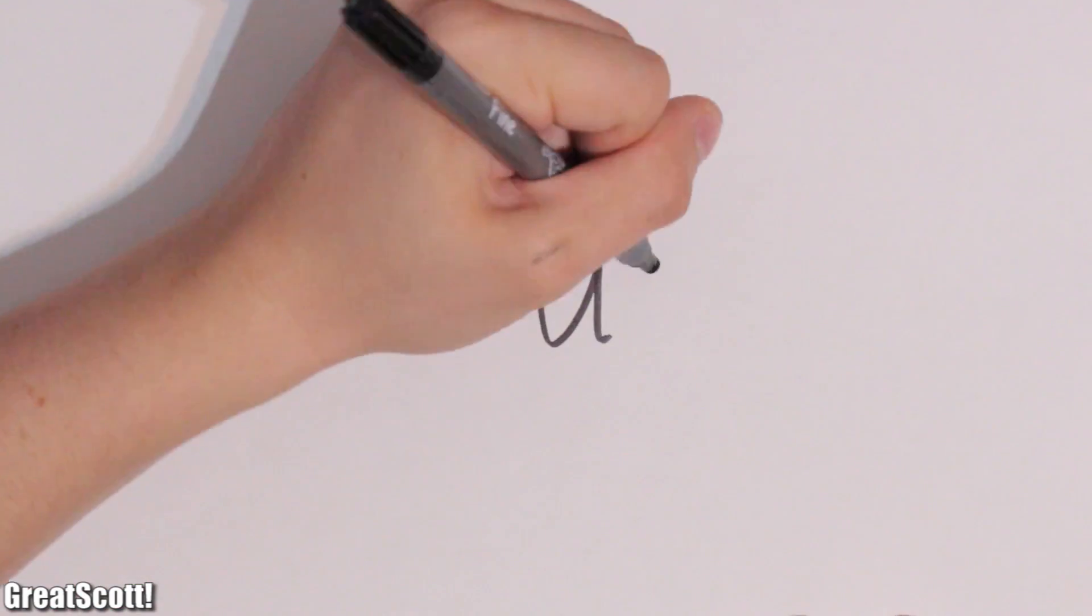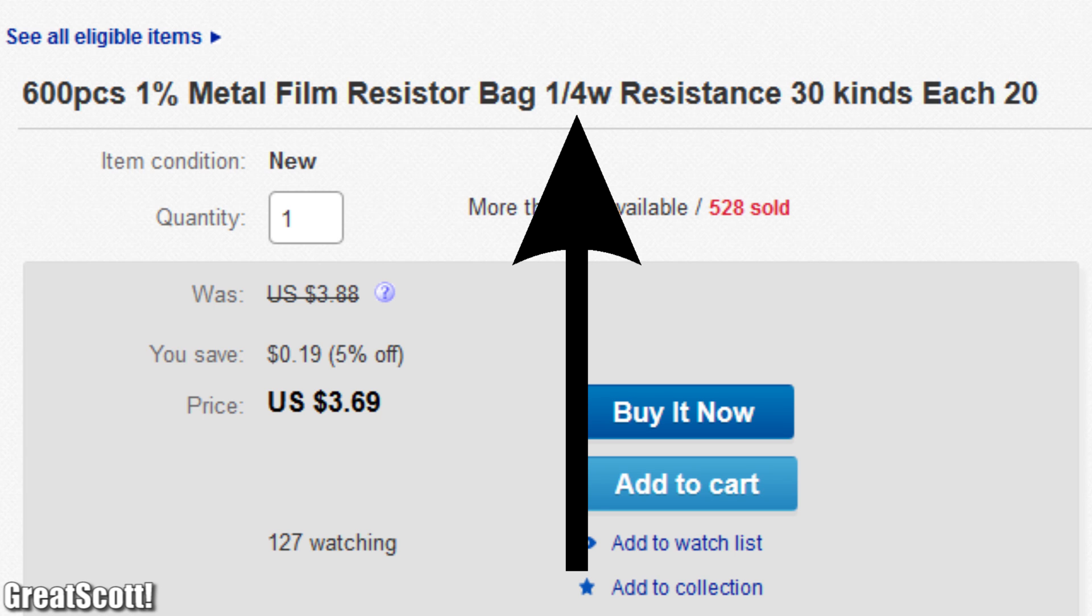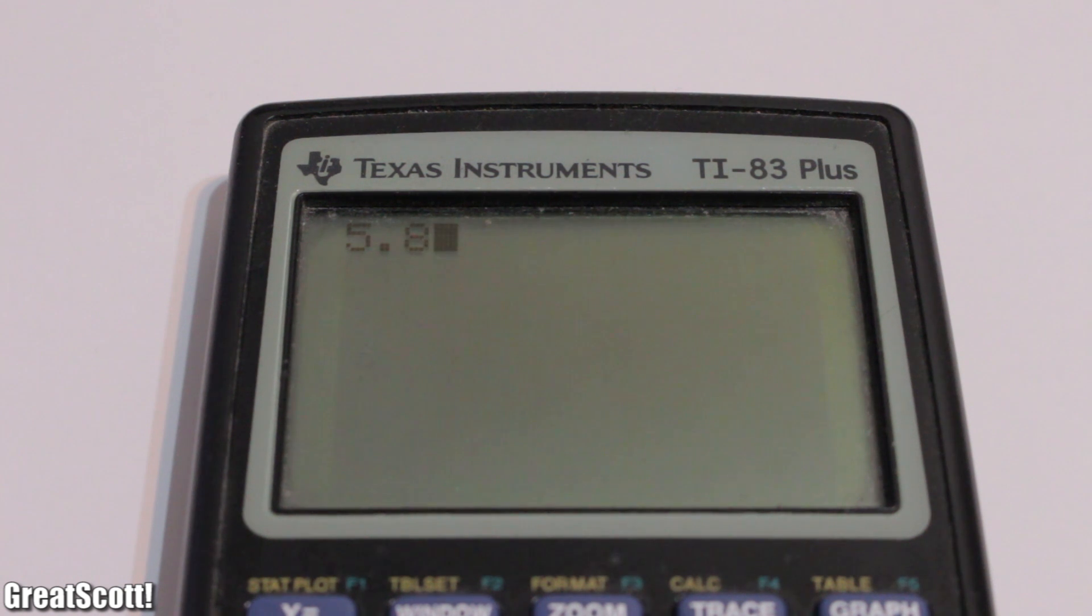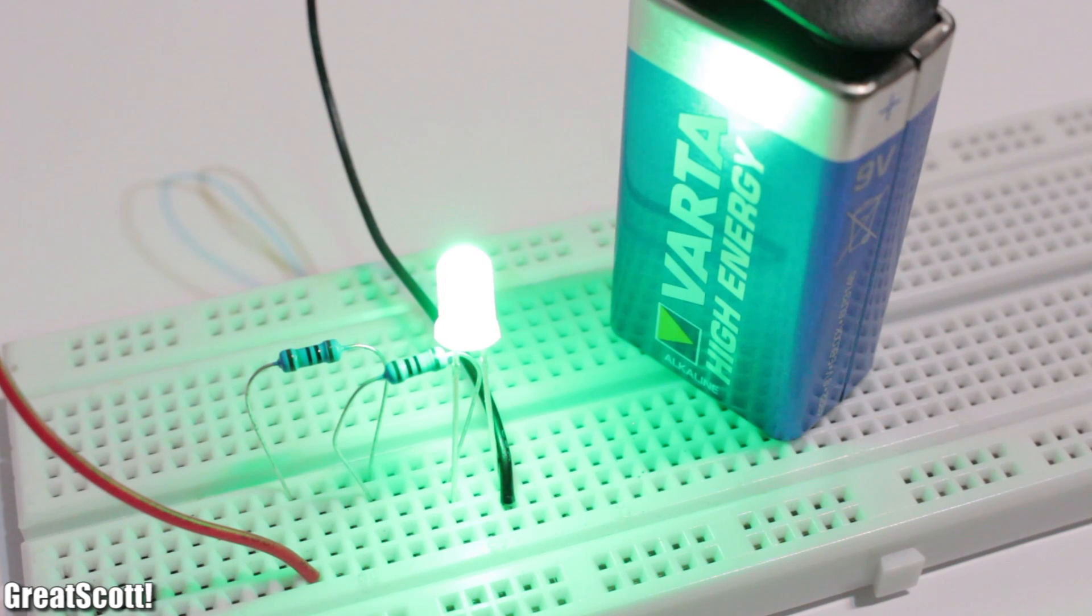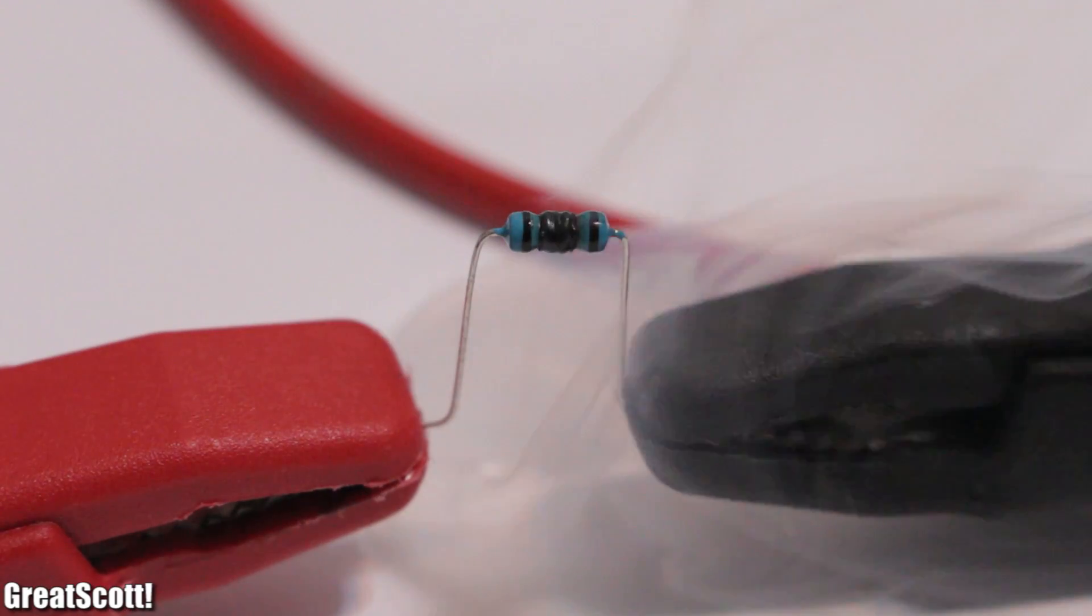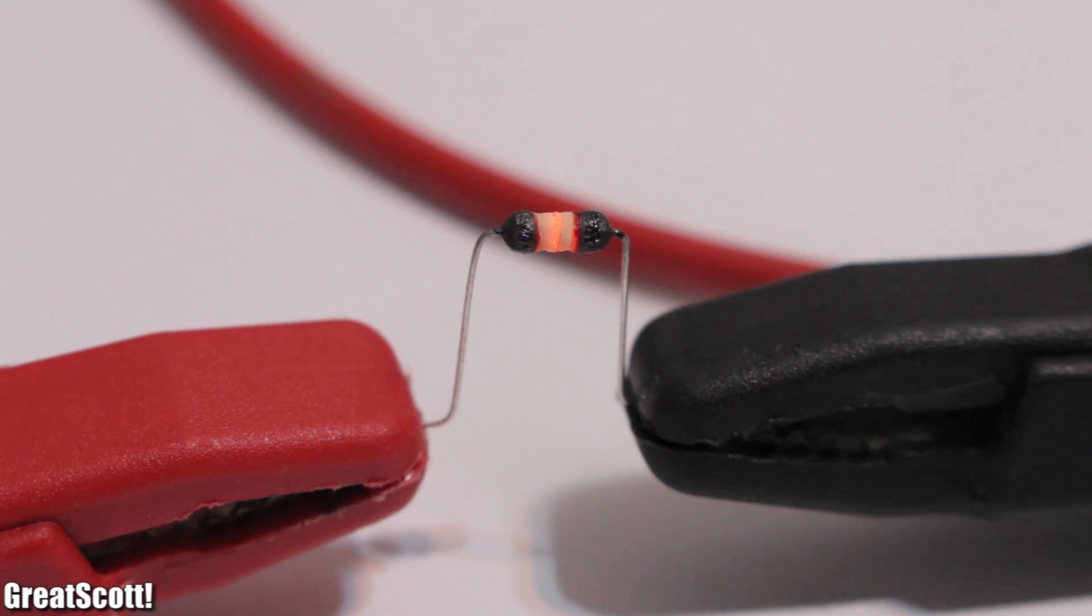Another rating for the resistor is power. Those are quarter watt resistors. We heat them up with a power of 5.8 volts multiplied by 0.02 amps, which equals 0.116 watts. Since 0.116 watts is smaller than 0.25 watts, everything is fine. If you overload your resistor, then it might look somehow like this.